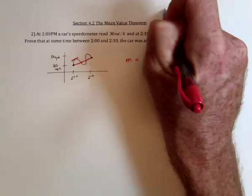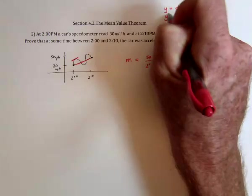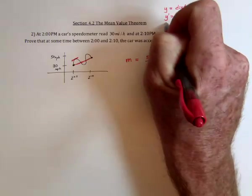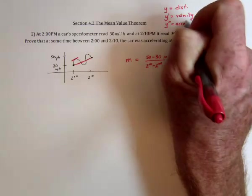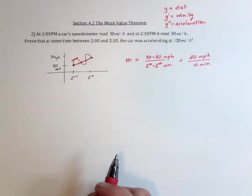So we'd have the original function would be distance. The derivative would be velocity, and the second derivative would be acceleration, how fast the velocity is changing over time.